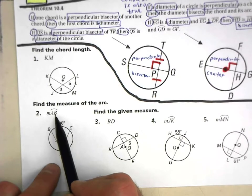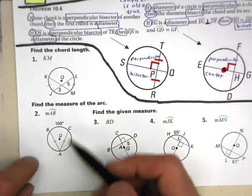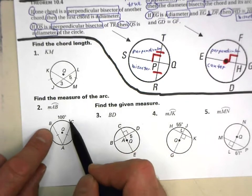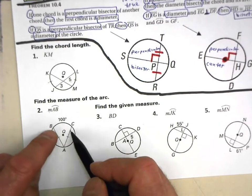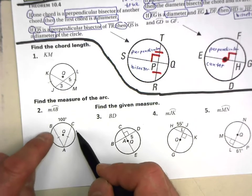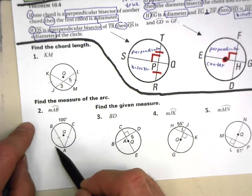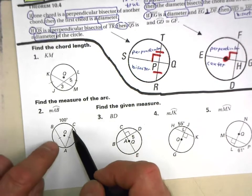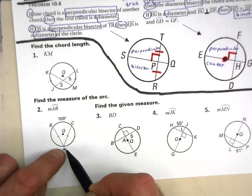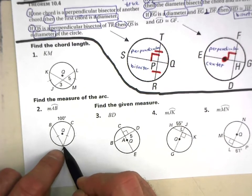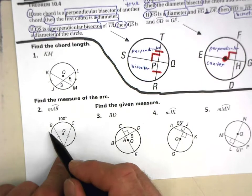Here they're asking for the measure of arc AB. We're told these two chords are congruent. We know this arc is 100. Since the two chords are congruent, their respective arcs will also be congruent. The sum of all three arcs is 360. Take 360, subtract 100 degrees, and you're left with 260. Divide that by 2 — because this is like a bisector of this larger major arc — and you will have the measure of one of these arcs.